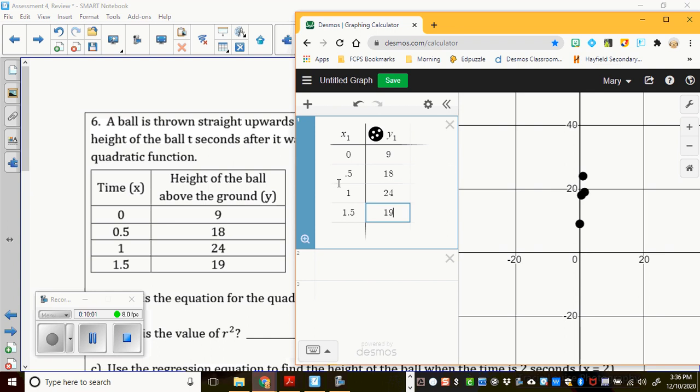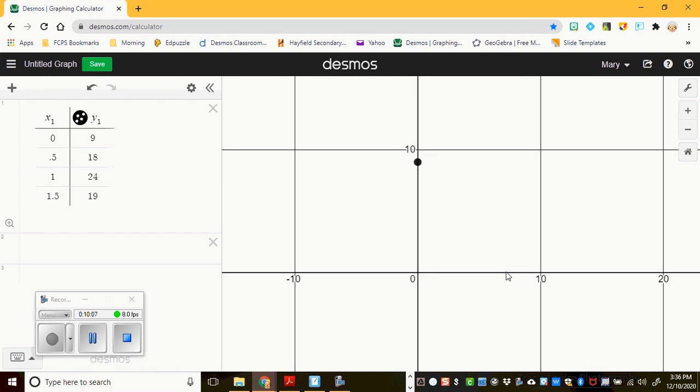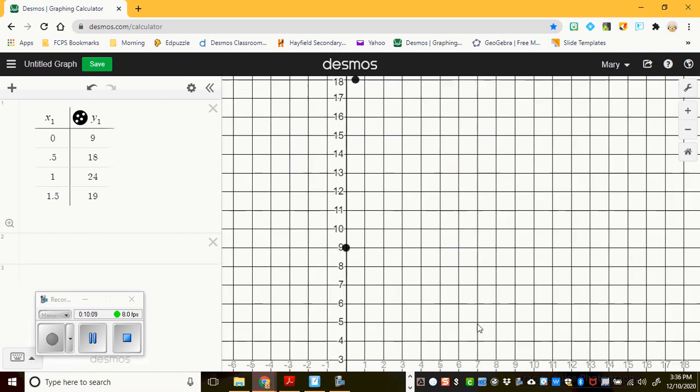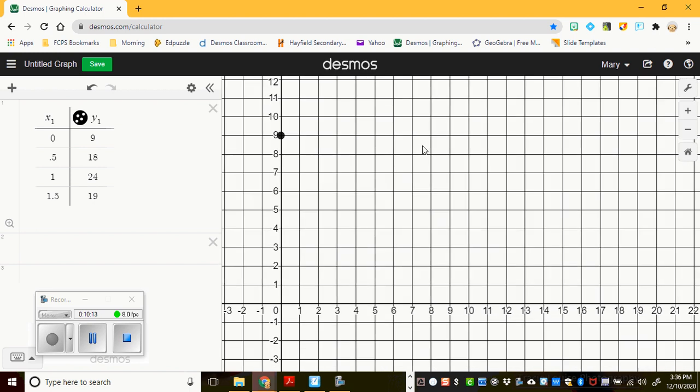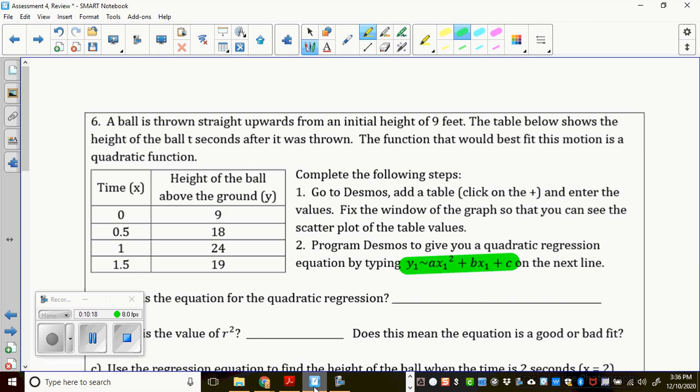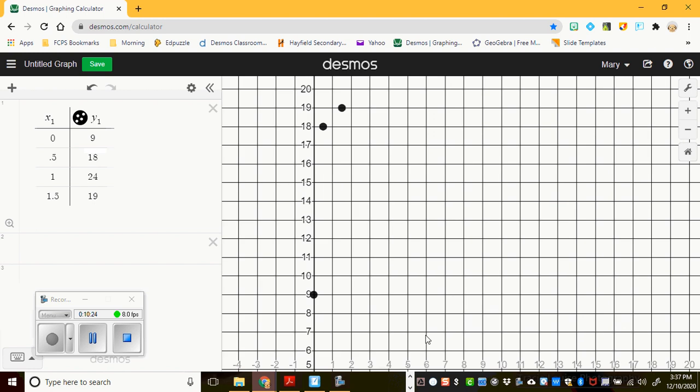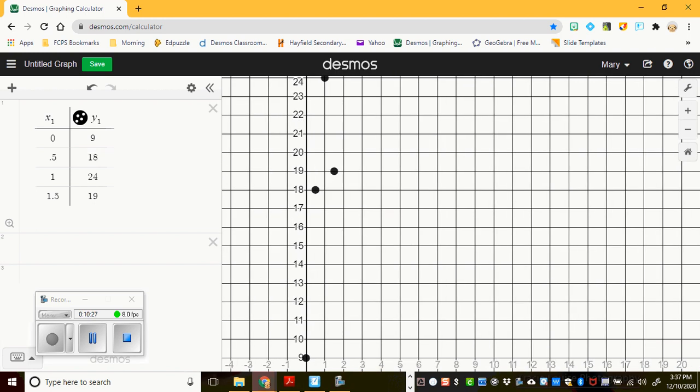And you might want to kind of fix your graph a little bit. You notice here that my graph is a little zoomed out. So I'm going to zoom in right here and try to do it so I can see my picture. Where is that other one? 1.5 and 19. Let me check that again. And, yep, that looks good, 24, 19. Oh, there it is. I see.